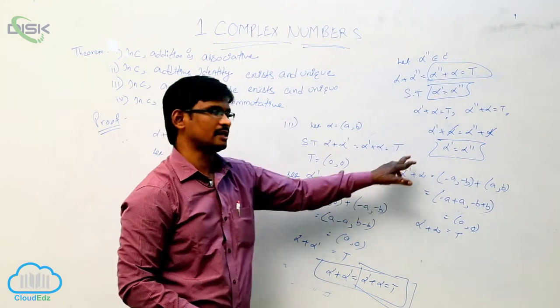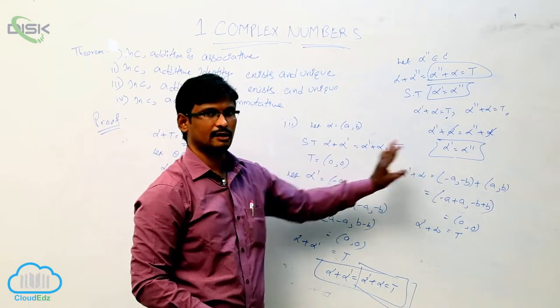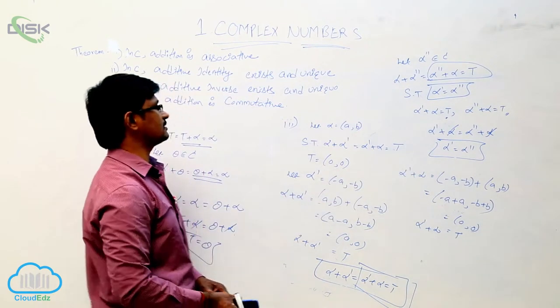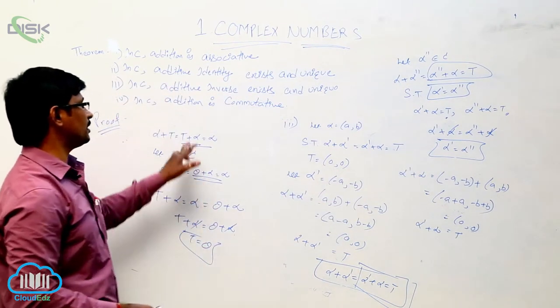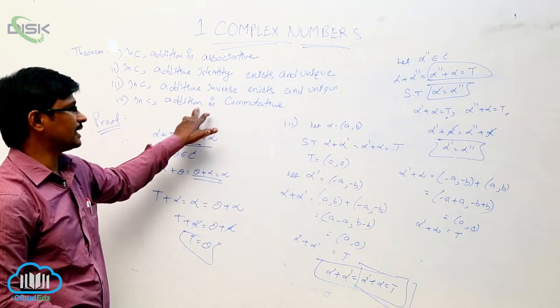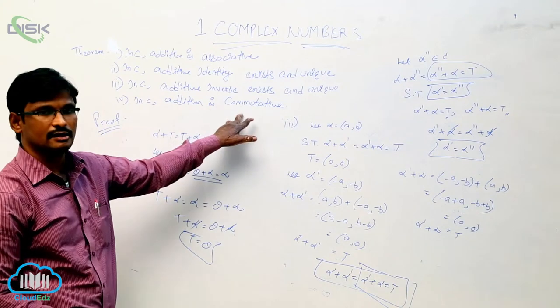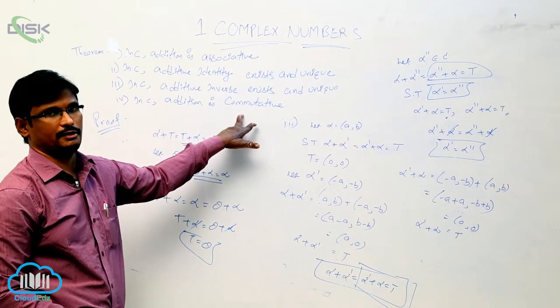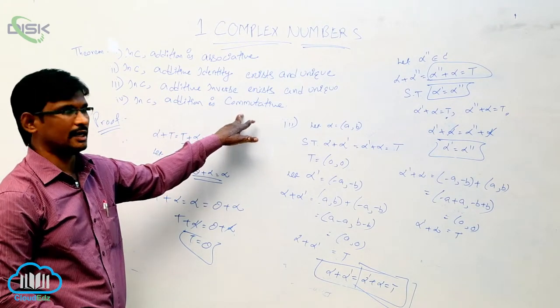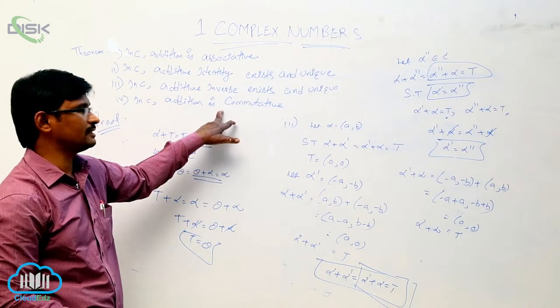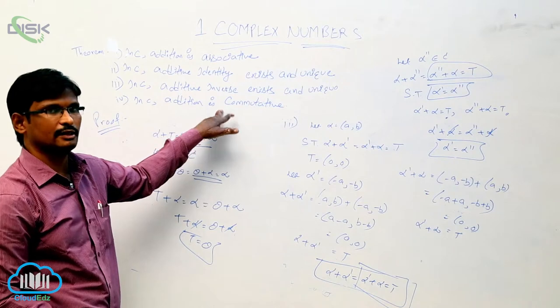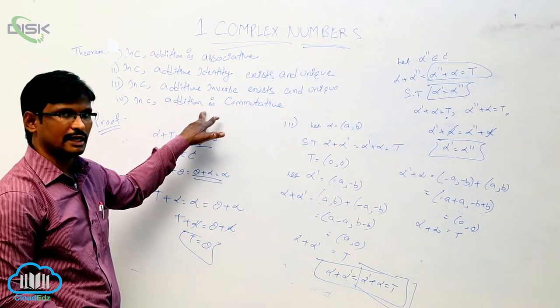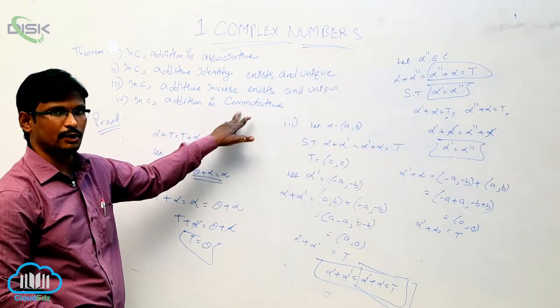This means in complex numbers the additive inverse exists and is unique. Now we will see the last property: the additive commutative property — in complex numbers, addition is commutative.